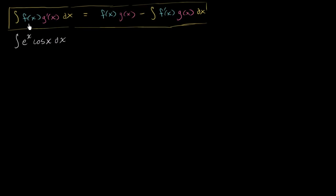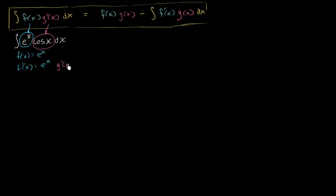Let's assign f of x equal to e to the x, and g prime of x equal to cosine of x. So f prime of x is also e to the x, since the derivative of e to the x is just e to the x. And g of x — the antiderivative of cosine of x — is going to be equal to sine of x.